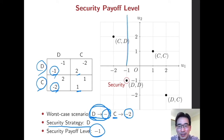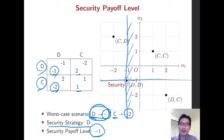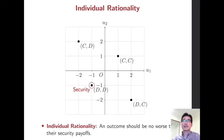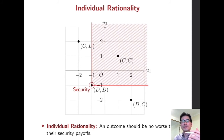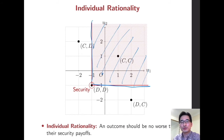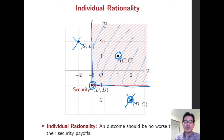So you are guaranteed at least −1, and similarly player 2 is guaranteed at least −1 by playing D. Based on the security payoff level, we can define individual rationality: an outcome should be no worse than each player's security payoff level. So if an outcome is individually rational, it must be in the region where both players receive at least −1. This leaves two individually rational outcomes: DD and CC. The other two outcomes — DC and CD — are not individually rational because one player would not accept them.